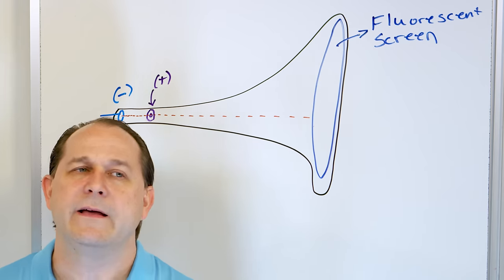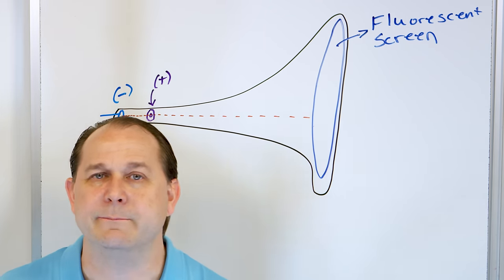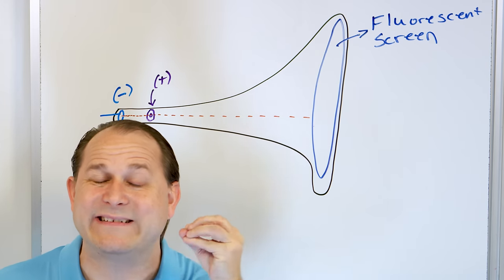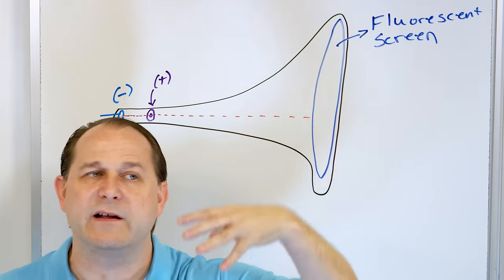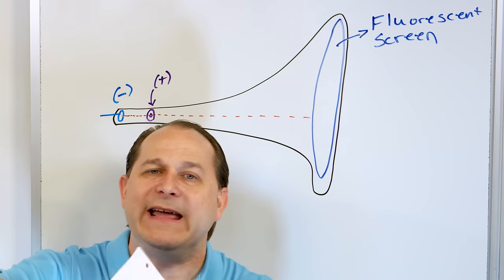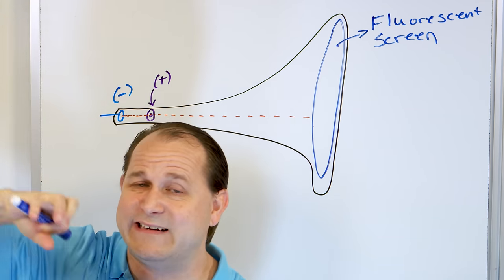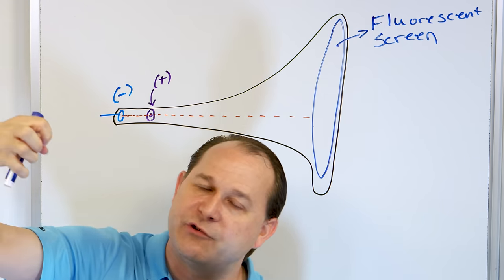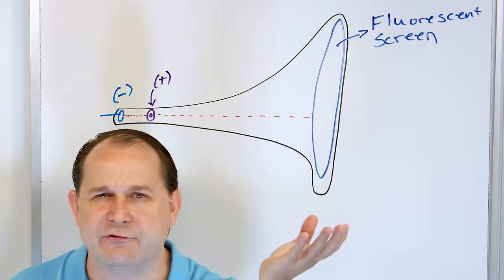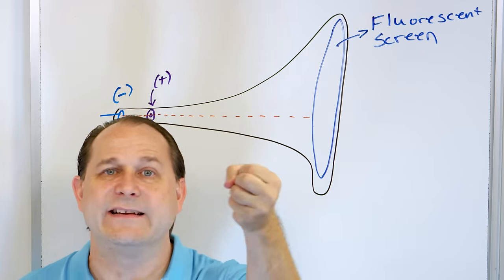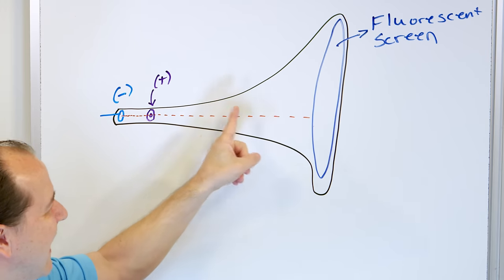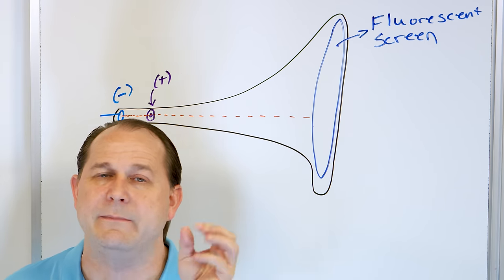Fluorescence works because when an electron hits the fluorescent material it kicks an electron in that material up to a higher energy state, and when it decays back down it emits a visible photon. You can't see the electron beam directly, but you can see where it hits the screen because of that emitted light. So this fluorescent screen allows you to visually see where the beam is impacting.